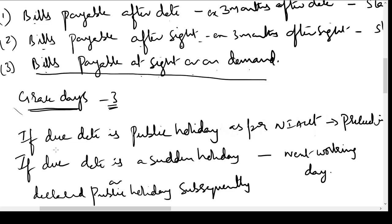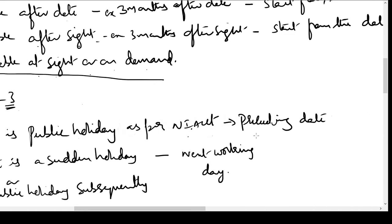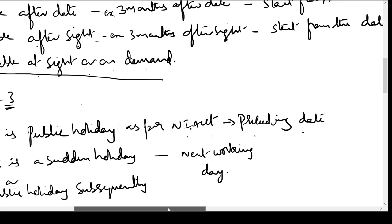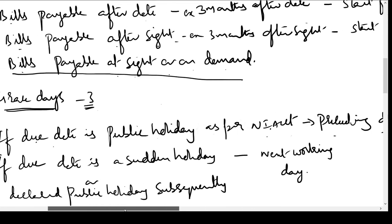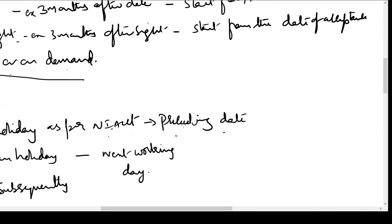If the due date is a public holiday as per the NI Act, we calculate: bill date plus duration plus grace days to arrive at the due date. If that due date falls on a public holiday declared under the Negotiable Instrument Act, then the preceding date will become the due date. On those holidays, the bill has to be honored on the previous day itself — you cannot defer payment to the next day.